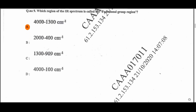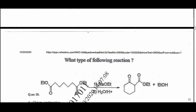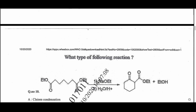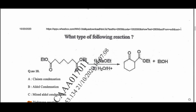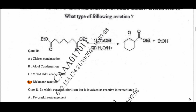Question 9: Which region of the IR spectrum is called the functional group region? Option A — 4000 to 1300 cm⁻¹ is the functional group region in the IR spectrum. Question 10: What type of reaction is the given reaction? It is the Dieckmann cyclization reaction. The intramolecular Claisen condensation is also known as the Dieckmann reaction.